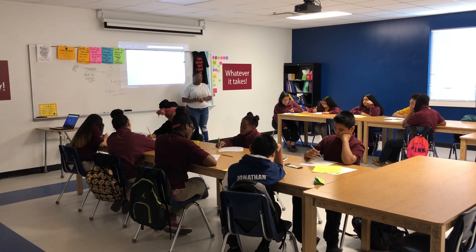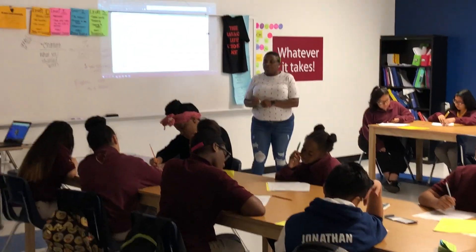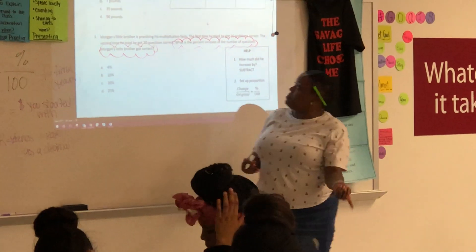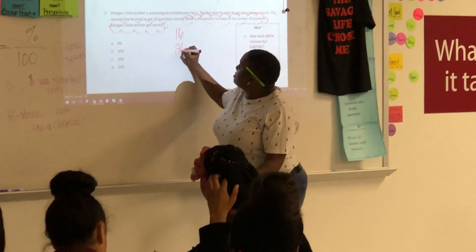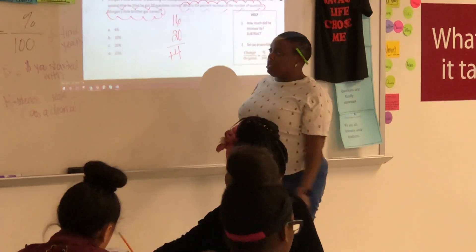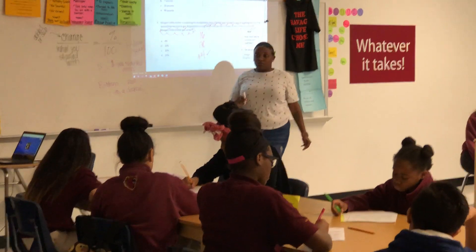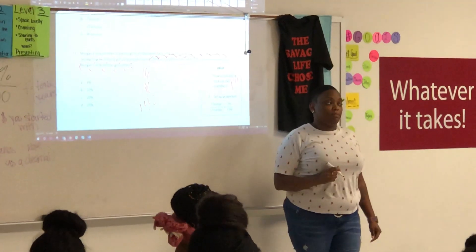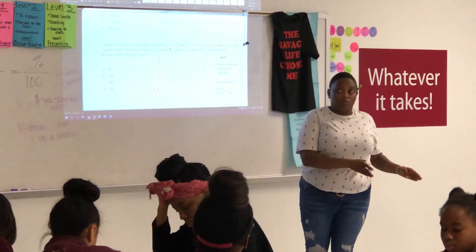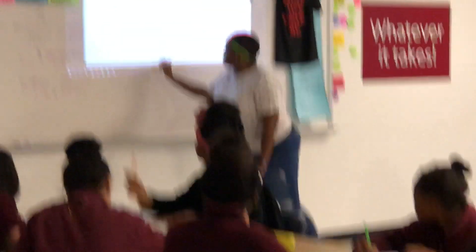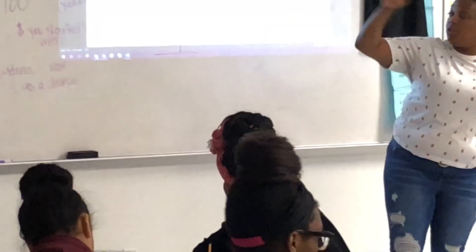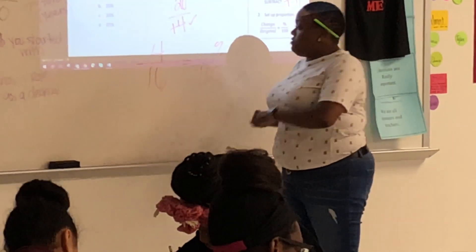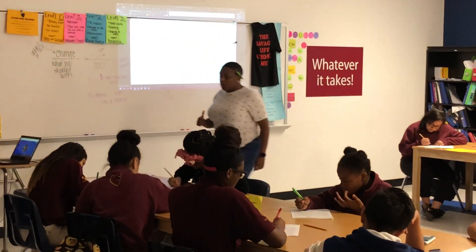If you look on the side, Ms. Thomas gave you a little box that says help. It's been a long time since you guys learned percent increase and decrease, but it's okay. Number one: how much did he increase by? He started with 16 and went to 20 — that was an increase of 4. So he went up by 4. This is how many he increased by — not percent yet, you still have to find the percent. So now you set up your proportion. Your change over the number you started with: the change is 4, the original is 16. So 4 over 16 equals percent over 100.